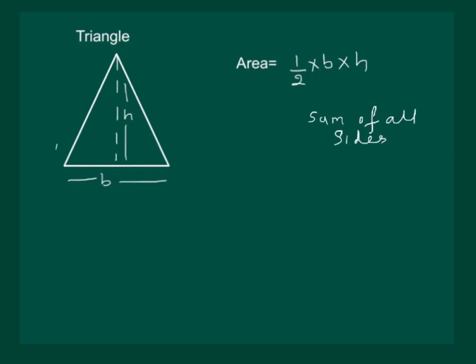Suppose the other sides are A and C. Then, perimeter will be A plus B plus C.